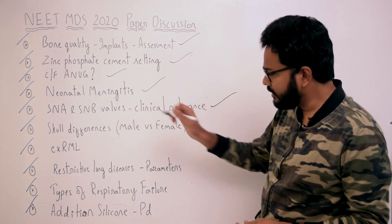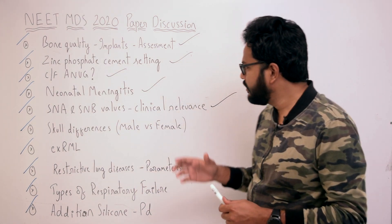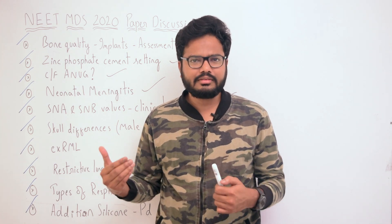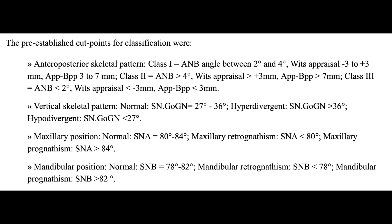The next topic involves SNA and SNB values and their clinical relevance for maxillary or mandibular prognathism or retrognathism. Normally, SNA is between 80–84 degrees; less than 80 indicates maxillary retrognathism, more than 84 indicates maxillary prognathism. SNB normal range is 78–82 degrees; less than 78 is mandibular retrognathism, more than 82 is mandibular prognathism.